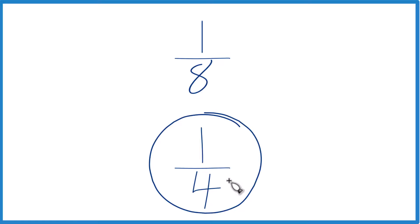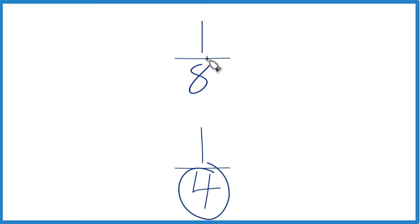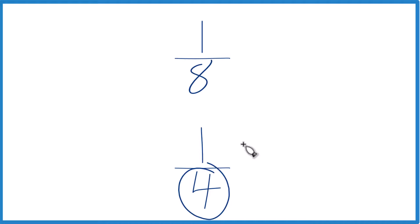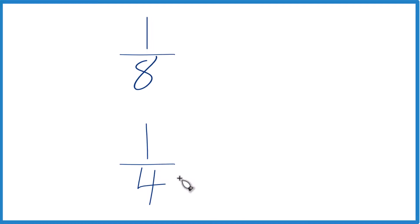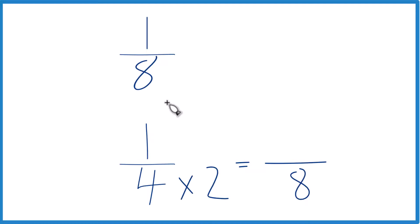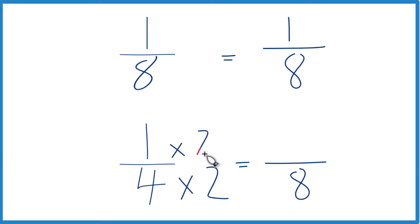You could also find a common denominator to figure this out. Right now we have 4 and 8 as our denominators. If these were the same, we could just compare the numerators and we'd know our answer. Let's multiply 4 times 2, because that would give me 8. I already have 8 in the denominator for 1/8, so I keep that the same. But I can't just multiply the denominator by 2 — I need to multiply the numerator by 2 as well, because 2 over 2 equals 1, so I'm multiplying by 1 and I don't change the value, just the way it's represented.